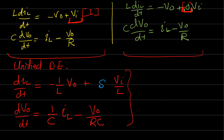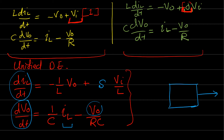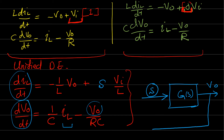These are the state equations. The states are the inductor current and the output voltage, and we have the first derivatives of each. The output for the open-loop buck converter is V_out, and the input is the switch state — either on or off. We can make a closed-loop system by adding feedback and a controller, comparing with a reference voltage.